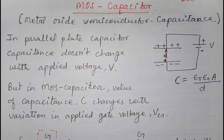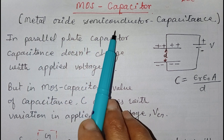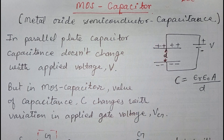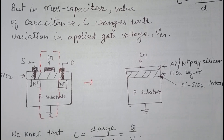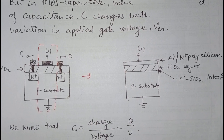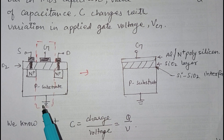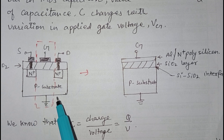Hello friends, welcome to our channel Brain Alive. In this video we will discuss MOS capacitor, means metal oxide semiconductor capacitance. Generally, MOS capacitor is not manufactured separately; it is automatically induced when we use MOSFET. This is the diagram of MOSFET.